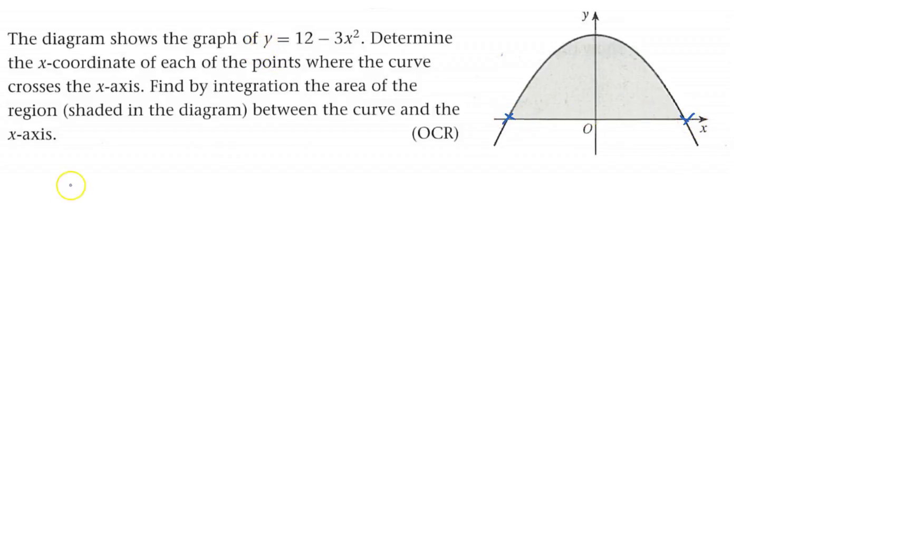So y is 0, and that means that 0 equals 12 minus 3x squared. Add 3x squared to both sides, then divide by 3, and then square root both sides, so x equals plus or minus 2.